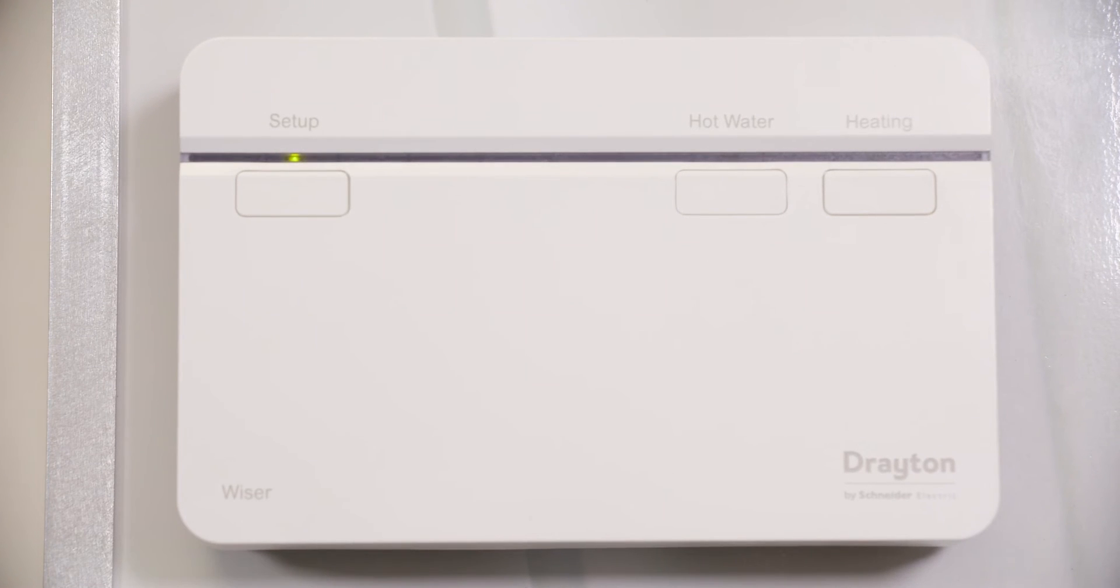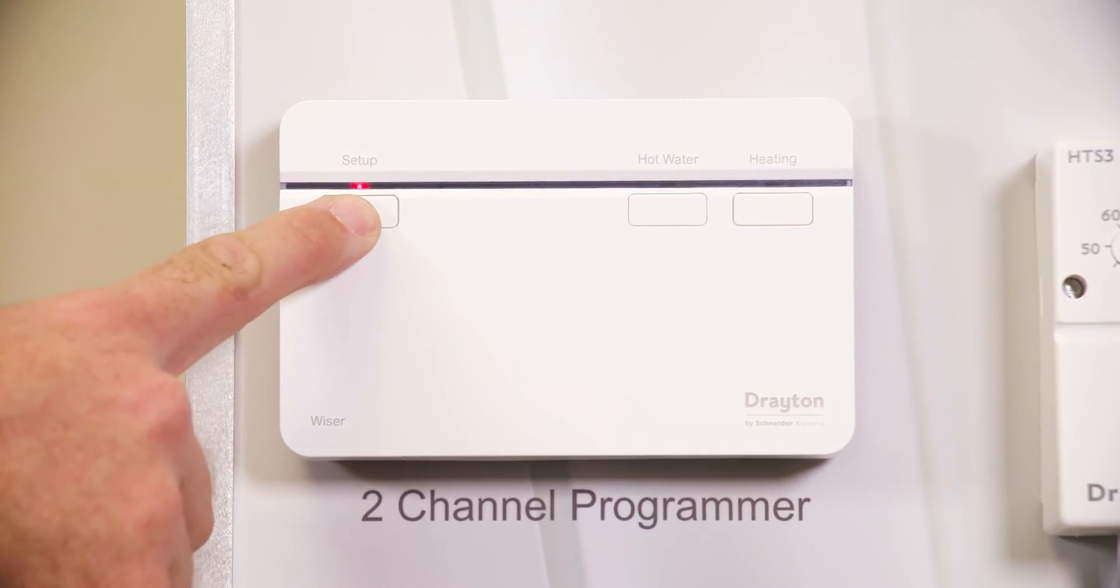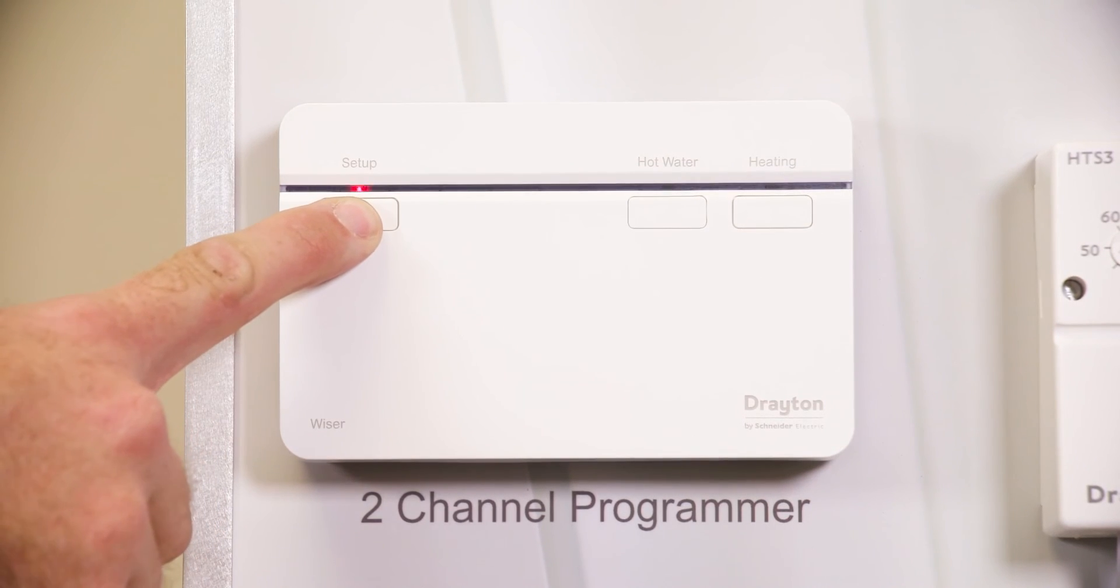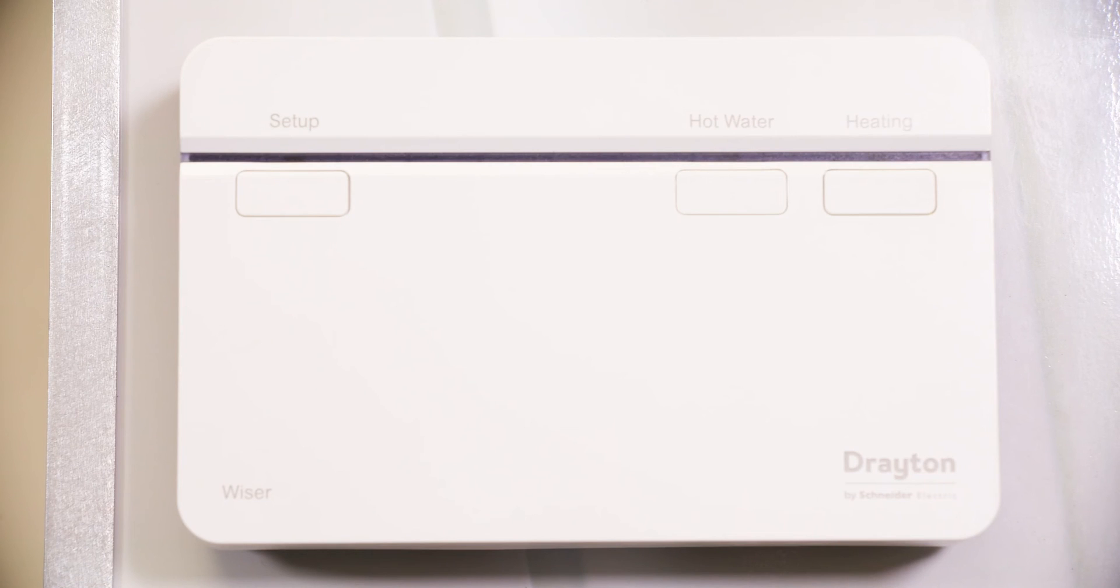If this doesn't happen, you will need to reset the Hub R. To do this, press and hold the setup button until all the lights turn off. The Hub R will reboot and the setup LED will then display solid green.